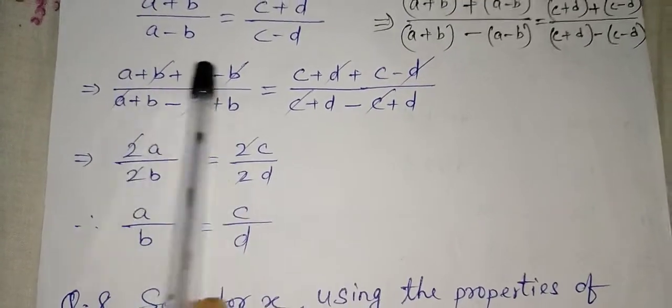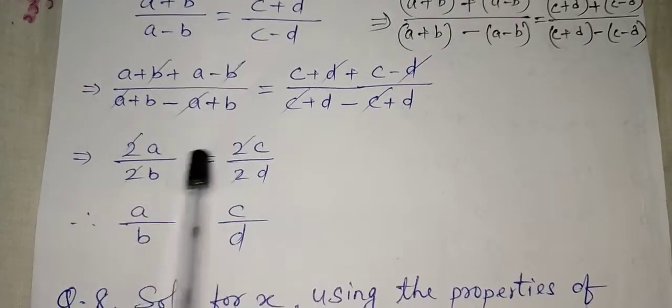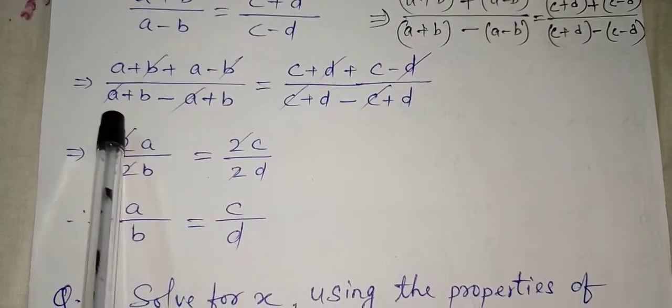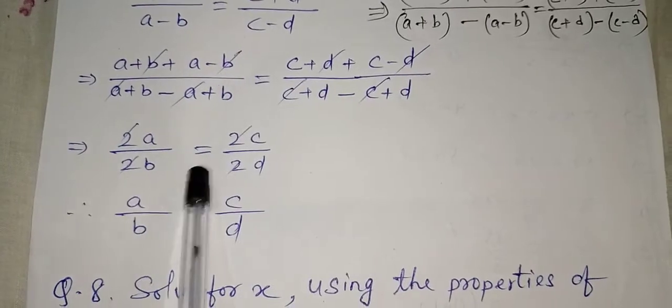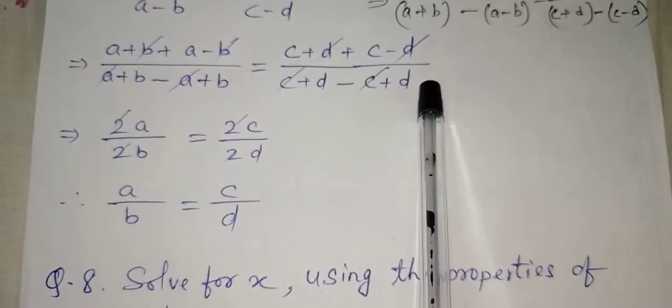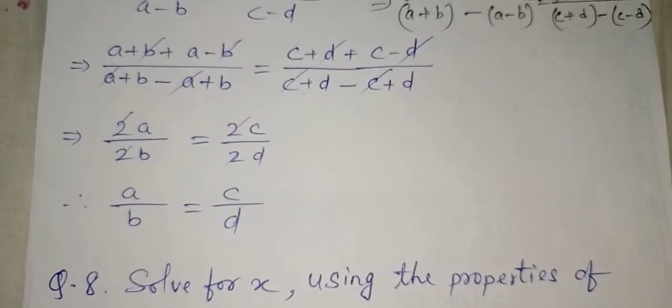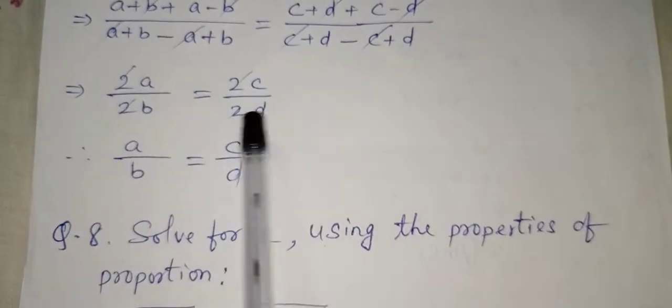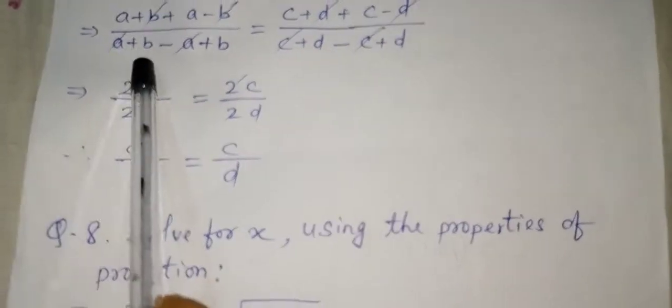So what is our result? a + a is 2a, and b + b is 2b. Similarly, c + c is 2c, and d + d is 2d. All the 2s cancel between numerator and denominator, and our final result is a/b = c/d.